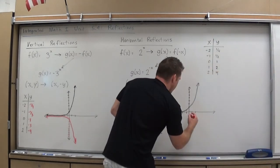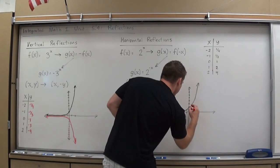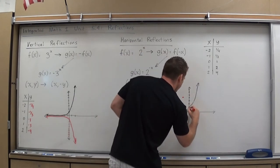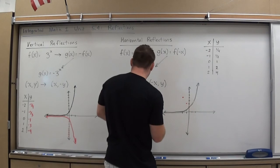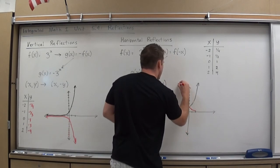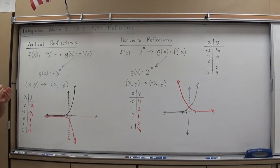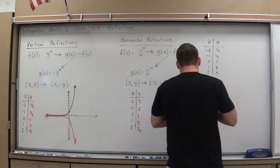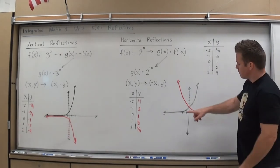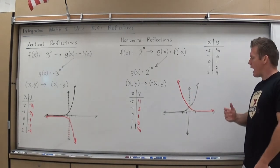So negative 2 comma 4, negative 1 comma 2, 0 comma 1, 1 comma 1 half, 2 comma 1 fourth. Same asymptote. And as you can see, it is indeed a horizontal reflection. It's reflecting over the y-axis, but the shape is reflecting horizontally. So the reflection is coming from the left to the right. And you can see because every point is matching up. And even where they are on the y-axis, the reflection line, the points stay where it was, which is what happens in reflections.